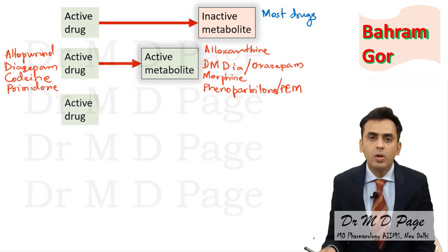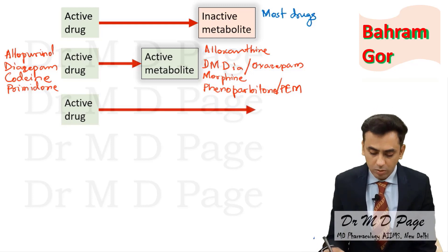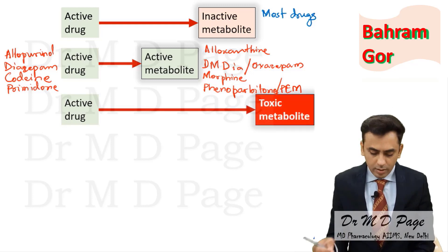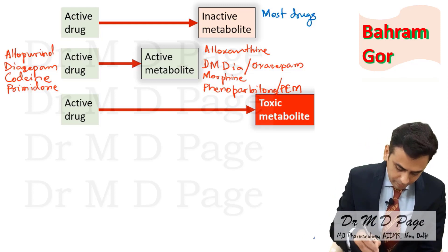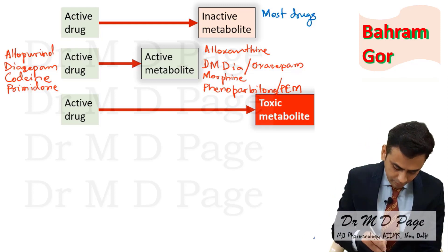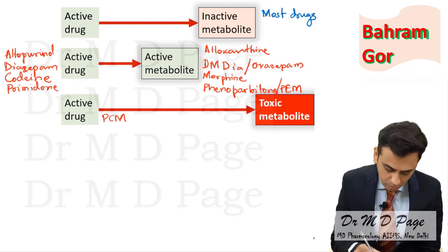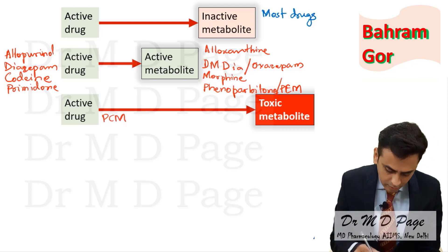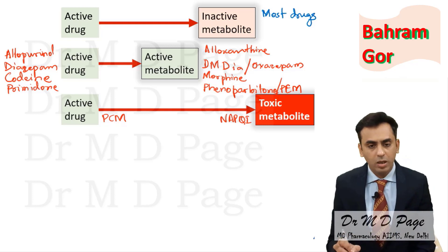One more case: the drug is active and after getting biotransformation it may produce a toxic metabolite. For example, paracetamol is active and its metabolite N-acetyl-para-benzoquinoneimine (NAPQI) is a toxic metabolite.